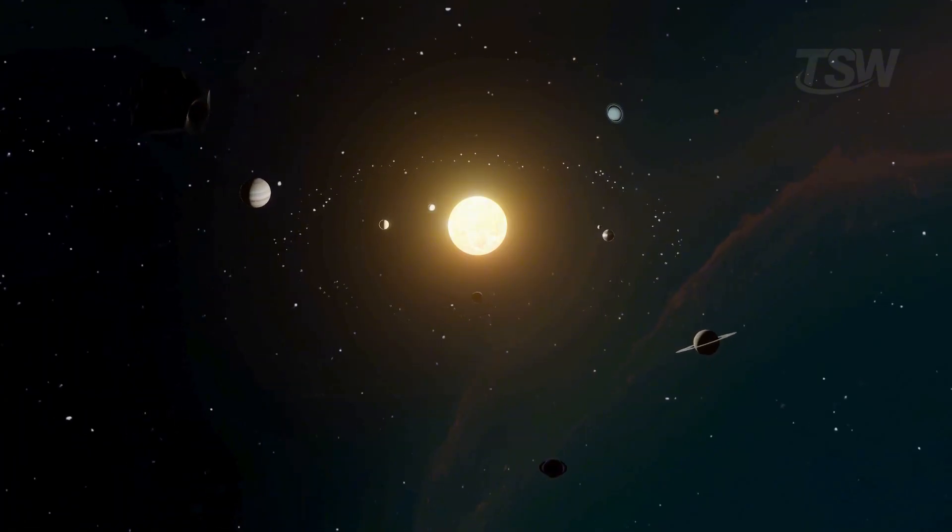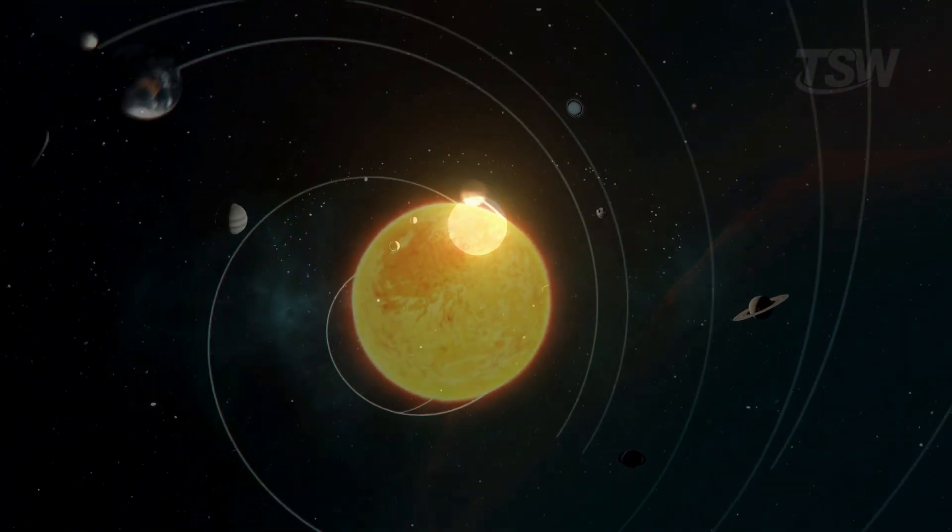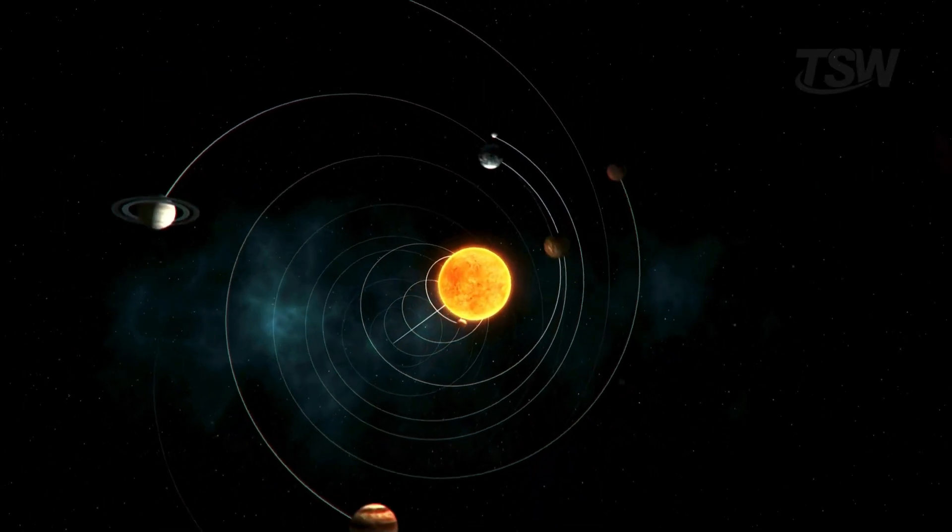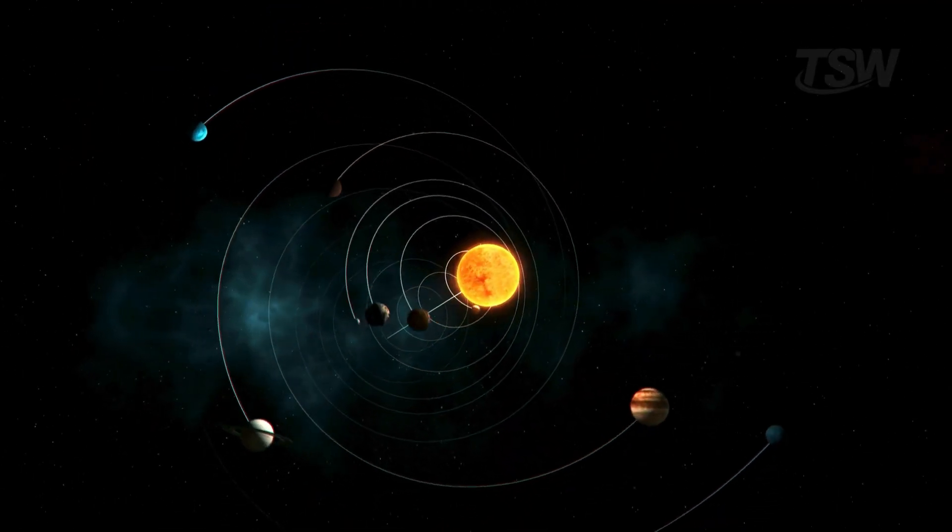The solar system isn't a fixed, flat, static model, but a living structure in constant motion, crossing space on a huge path through the galaxy. The truth is the sun is never still.